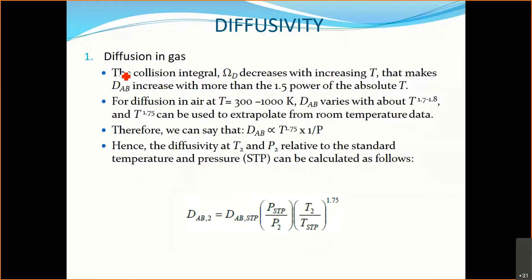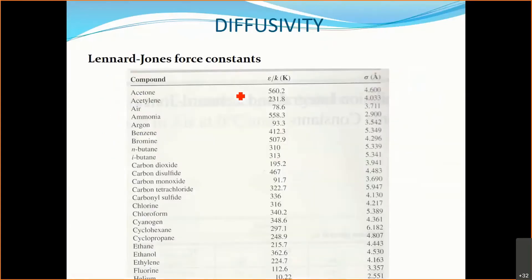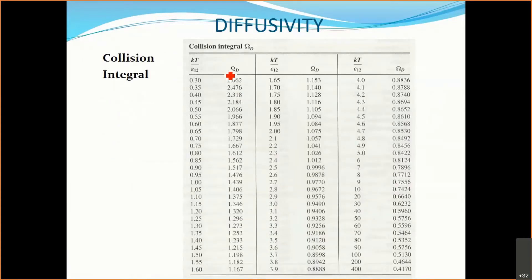That was how we can use the equation to find the diffusion coefficient. The next thing we are going to look at is the value of our collision integral, omega_d. It is actually related to temperature. Looking at the table, in order to find the value of omega_d you need the value of kT/ε_AB, where k is the Boltzmann constant, T is temperature in Kelvin, and ε_AB is the combined energy parameter.